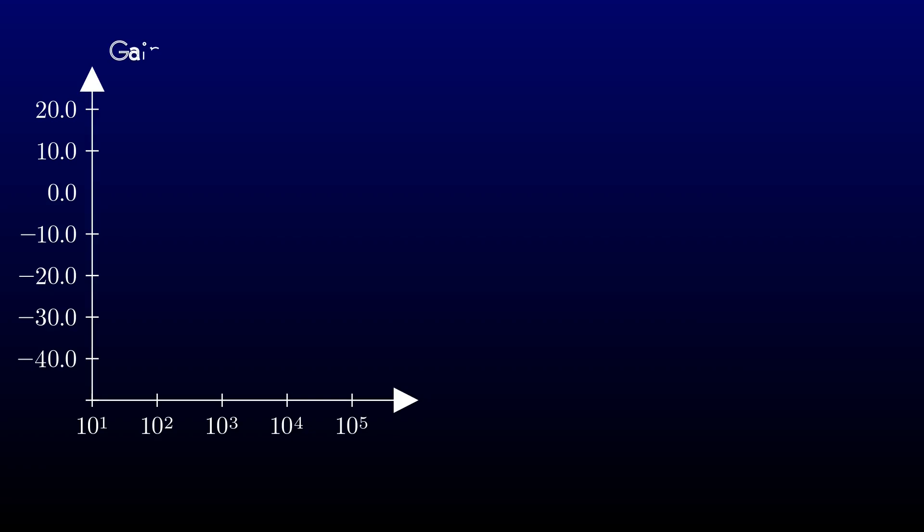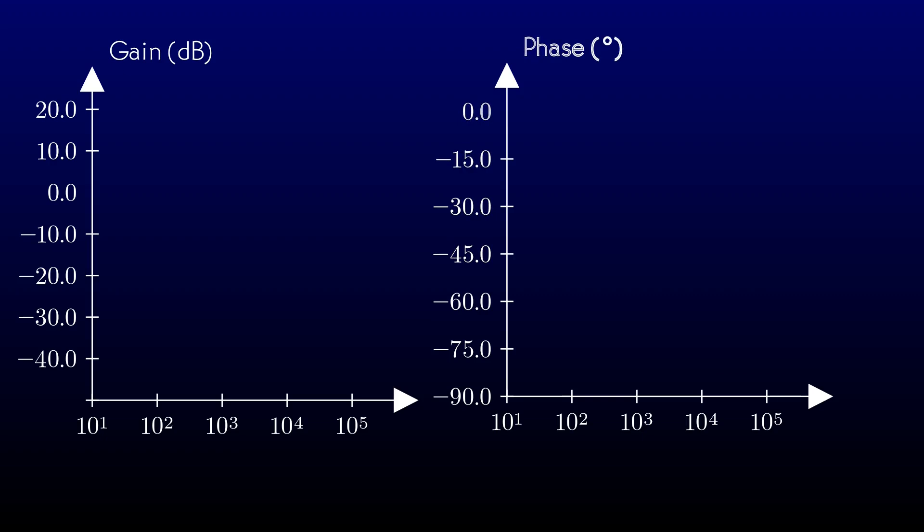Usually, the units are decibels. Remember that 20 decibels represents a factor of 10 in voltage. The other one measures the difference in phase, the amount by which the output signal leads or lags the input.